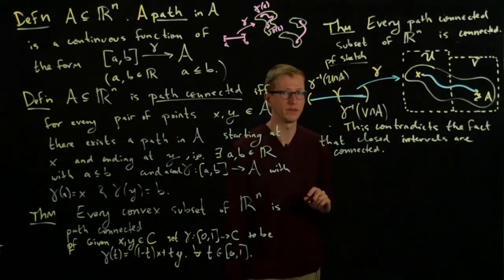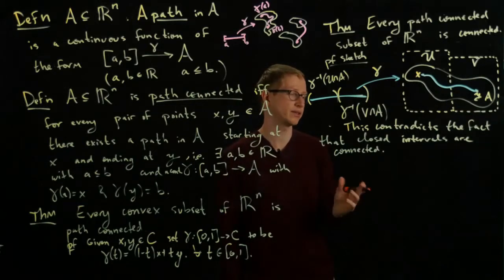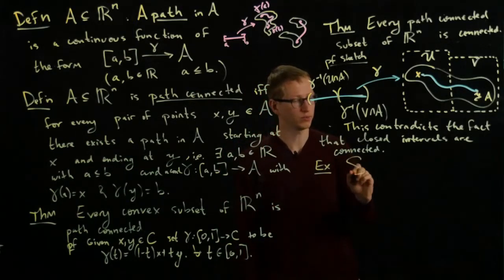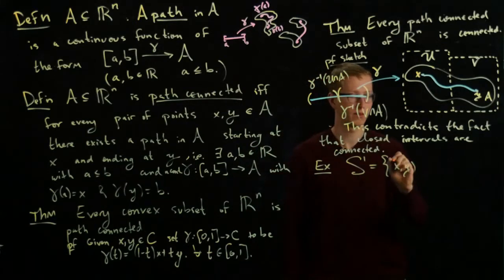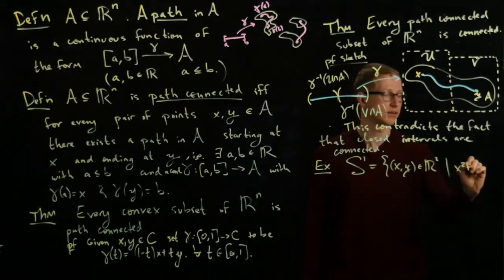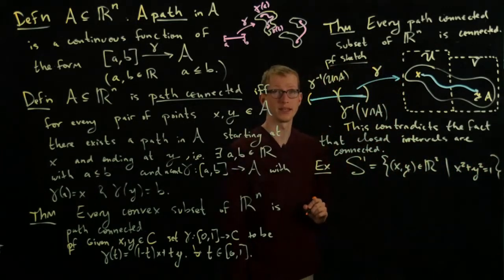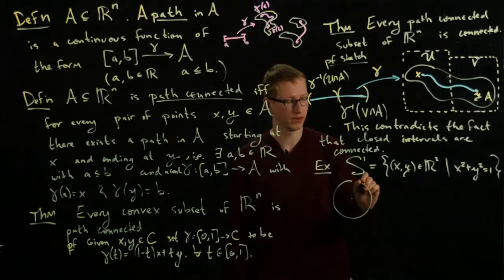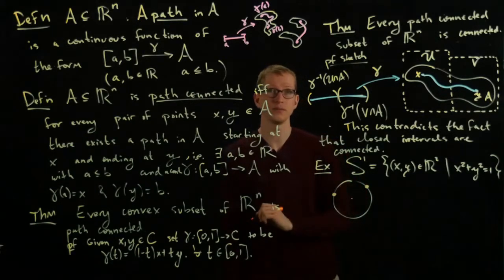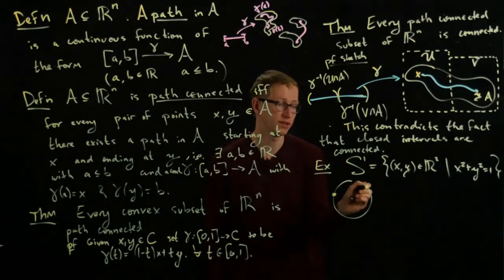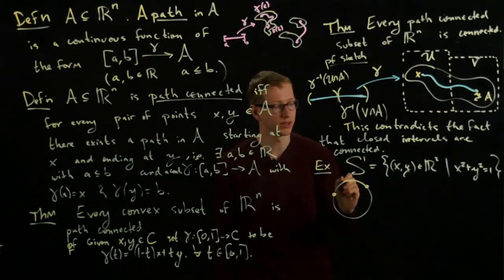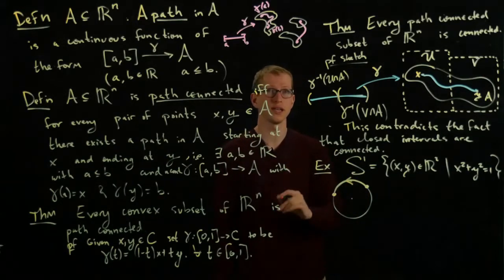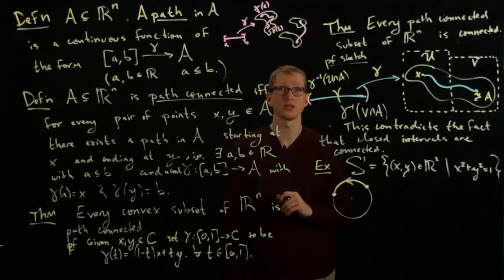So what are some other examples of path-connected sets? One of the examples that you can look at in the notes is S1, which is the set of points (x,y) in R2 whose square is equal to 1. This is an example of a path-connected subset of R2. The idea is rather simple to see why it's path-connected. If I take any two points, I can just look at the path that goes counterclockwise. I would have to actually write a parametrization for such a path, but we can do that, and I'll leave that to you as an exercise.